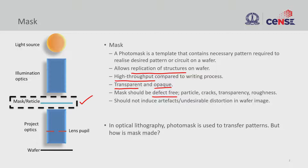Ideally, you want a line to be very smooth. But if your mask has roughness, that roughness will be transferred to your wafer as well. All of these — particles, cracks, transparency issues, and roughness — are considered defects, so we should have a defect-free mask layer.